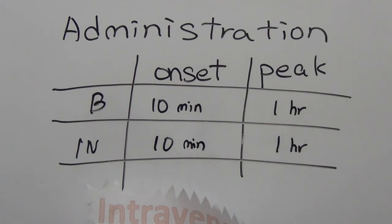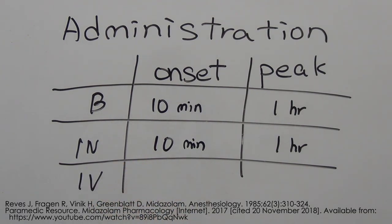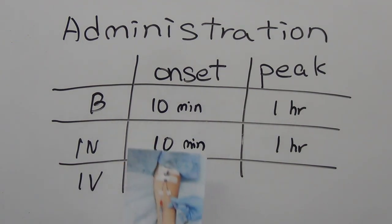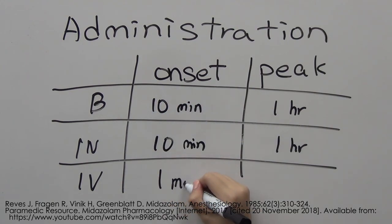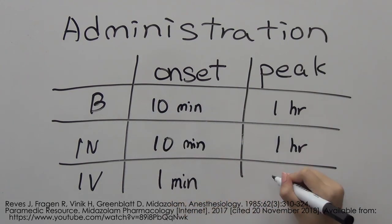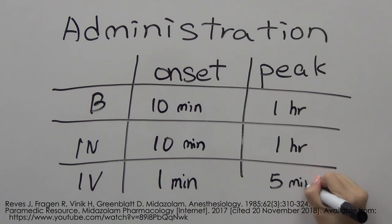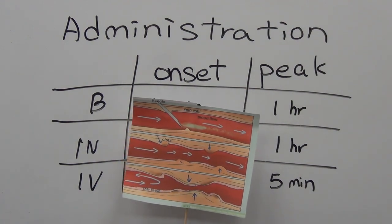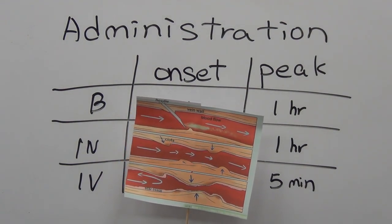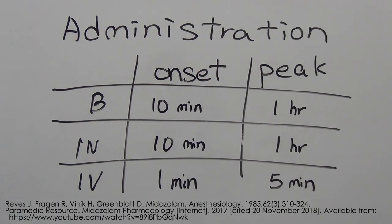Intravenous administration is the most common way of administering midazolam. It has a rapid onset of action of 1 minute and peaks after 5 minutes. There is high bioavailability as injection directly into the blood avoids first-pass metabolism. However, puncturing of the skin sometimes causes collapse of the vein, and as a result this route is not commonly used for paediatric patients as there is a higher risk this may occur.